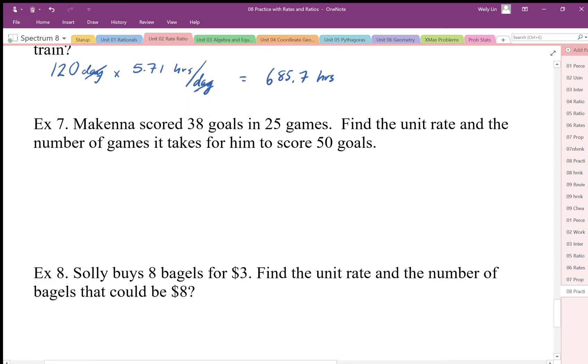Makenna's scoring 38 goals in 25 games. I'm going to set this one up as a ratio. I'm going to do a couple ways. So 38 goals in 25 games. We want to know the number of games for 50 goals. As long as I have the same comparison, I'm okay. So I can find a multiplier here. In fact, I'm going to use my unit rate. I'm going to do 38 divided by 25 gives me 1.52 goals per game.